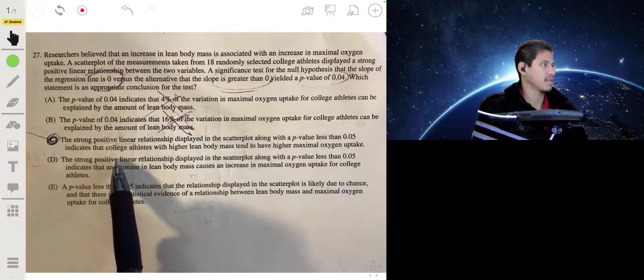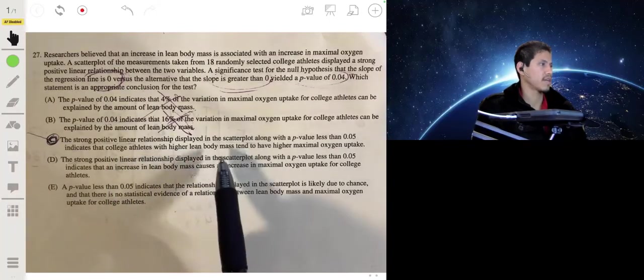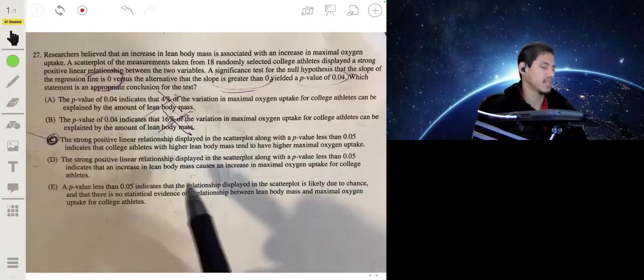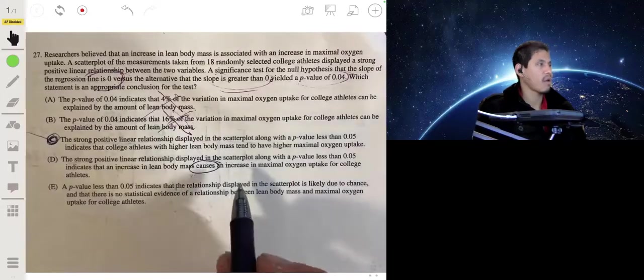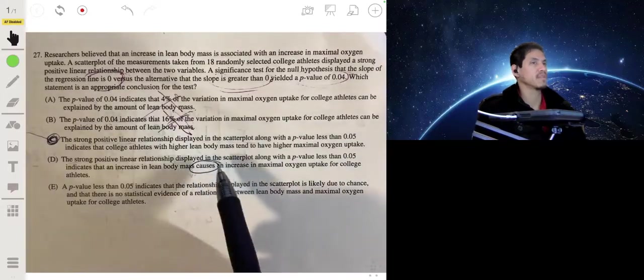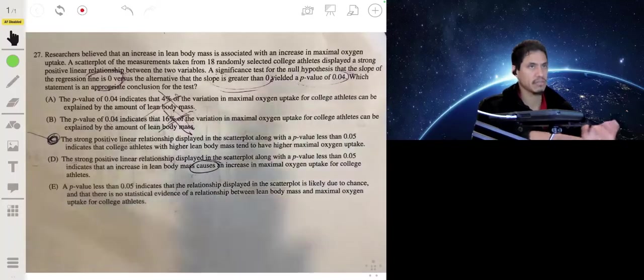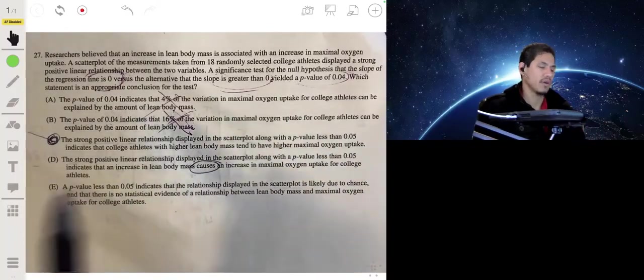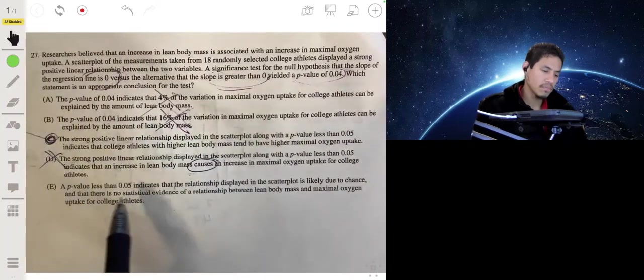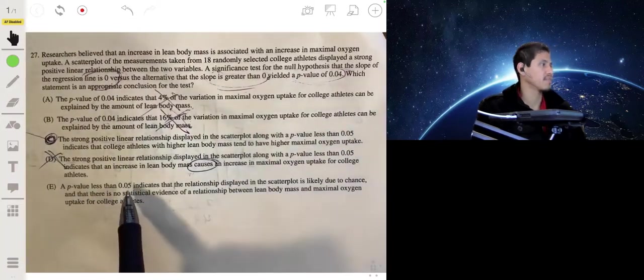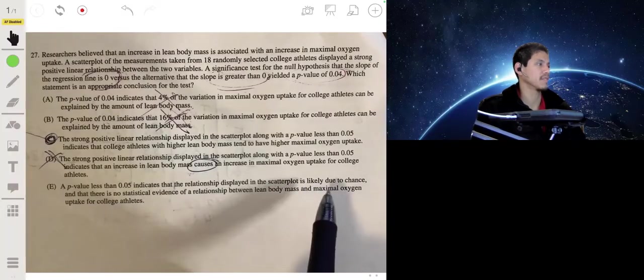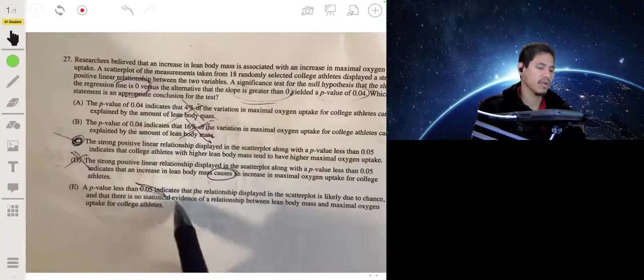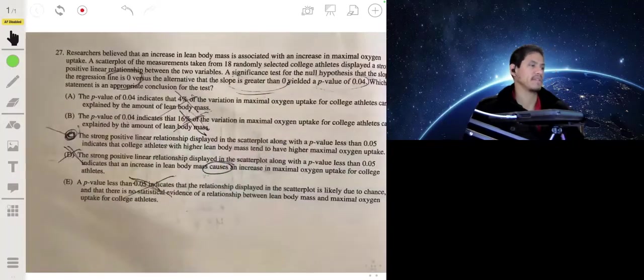Let's look at the other ones. The strong positive linear relationship displayed in the scatterplot along with the p-value less than 0.05 indicates that the increase in lean body mass causes an increase. We can't say cause, all we can say is relationship. We'd have to do an experiment. A p-value less than 0.05 indicates that the relationship displayed in the scatterplot is likely due to chance and there's no statistical evidence. Well, there is statistical evidence. That's our whole point here. So C is still our answer.